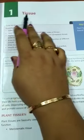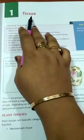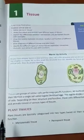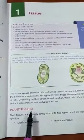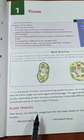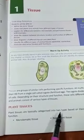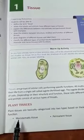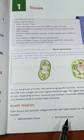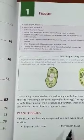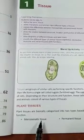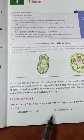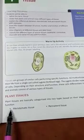We will start with Chapter 1: Tissue. In this chapter, first we will do the plant tissues. Plant tissues are basically categorized into two types: meristematic tissue and permanent tissue. These two types are based on the stages of development and their function.